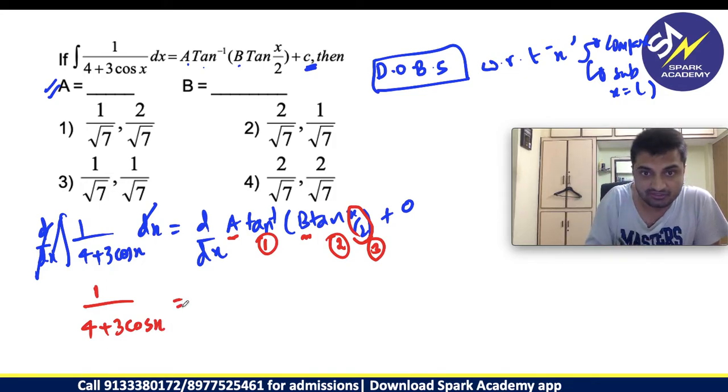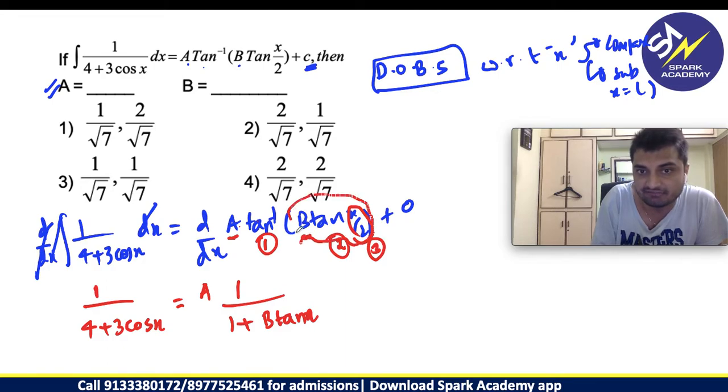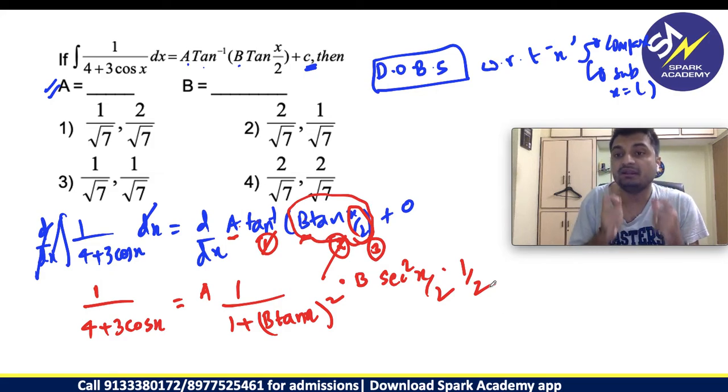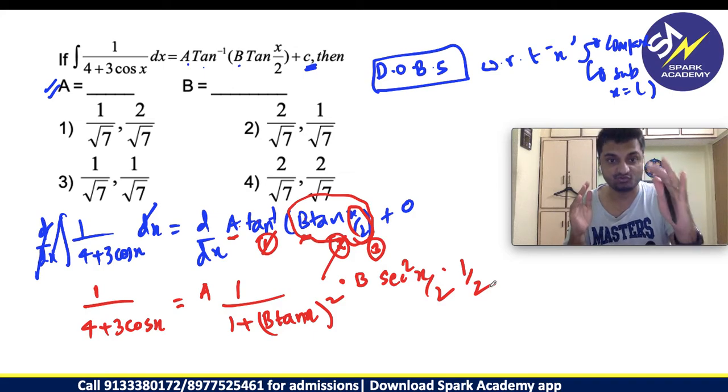What we will get is 1 by 4 plus 3 cos x equals A times derivative of tan inverse is 1 by 1 plus x square. Instead of x, you have this complete term. I will write it as 1 by 1 plus B tan x by 2 whole square. B is a constant, B comes out. Derivative of tan is secant square x by 2. Derivative of x by 2 is 1 by 2.